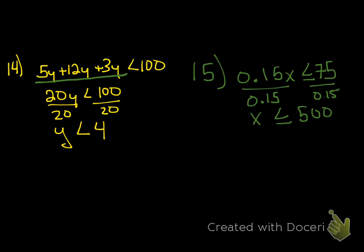I hope this made sense. If you have questions, please ask me. For the assignment, I want you to answer this question: explain why you flip the inequality sign if you multiply by a negative, and why you don't flip the inequality sign if you multiply by a positive. Alright, you guys have a good night.